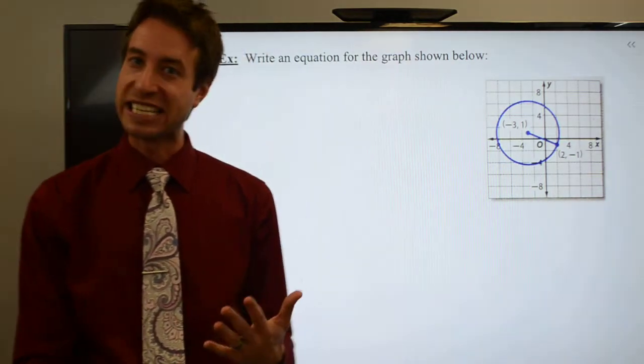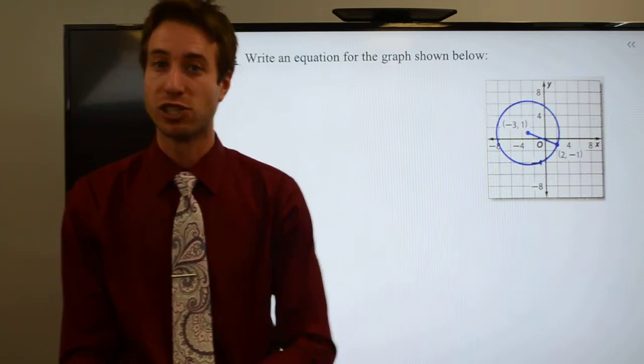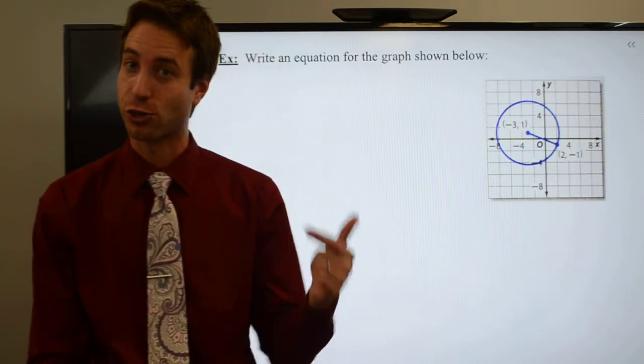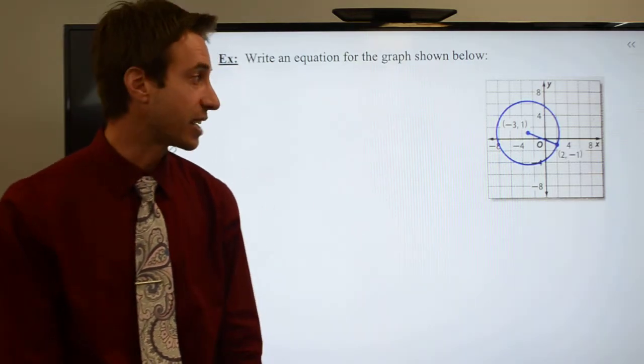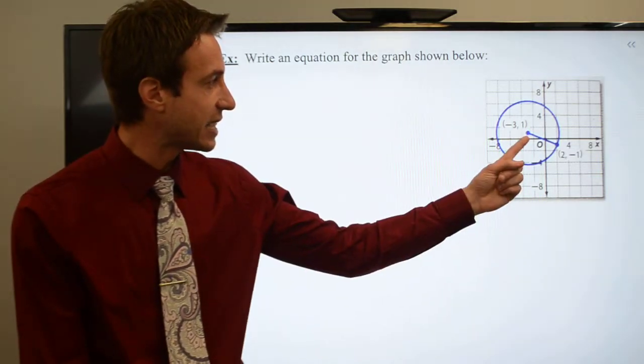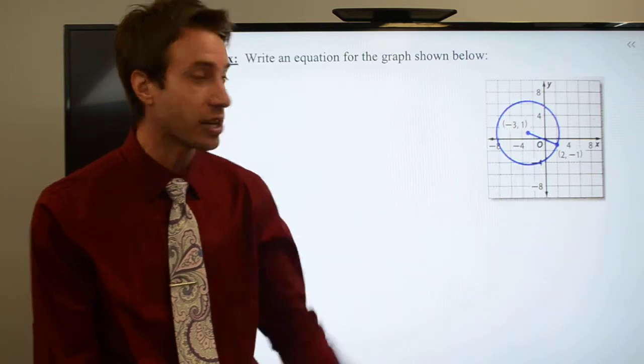Really all you need to do upon initial visual inspection is check to see is my circle centered at the origin or is it centered at some value h and k. I take a look at it and I can see that my center is at minus 3, 1.